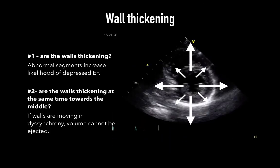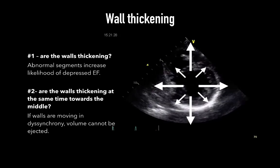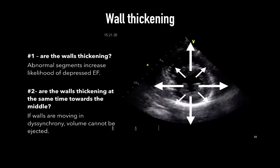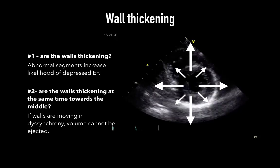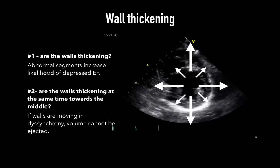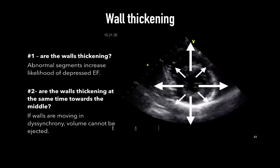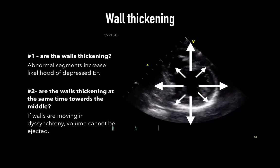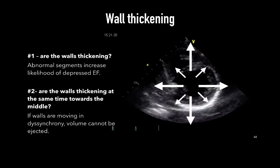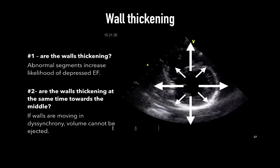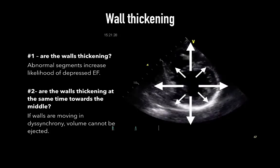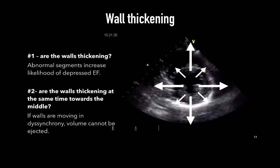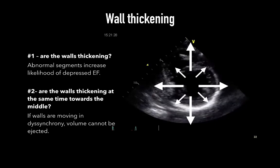In visual estimation, the first question is always: are the walls thickening? If some part of the walls are not contracting, this means dysfunction, and in most cases denotes the possibility of a decreased EF. Thickening of the wall can be approximated to a biceps contraction — the same number of fibers become more compacted and thick. The second question is: are the walls thickening at the same time and towards the middle of the cavity? If one wall moves toward the center while another is pushed away, effectively there is no ejection of volume out of the cavity.